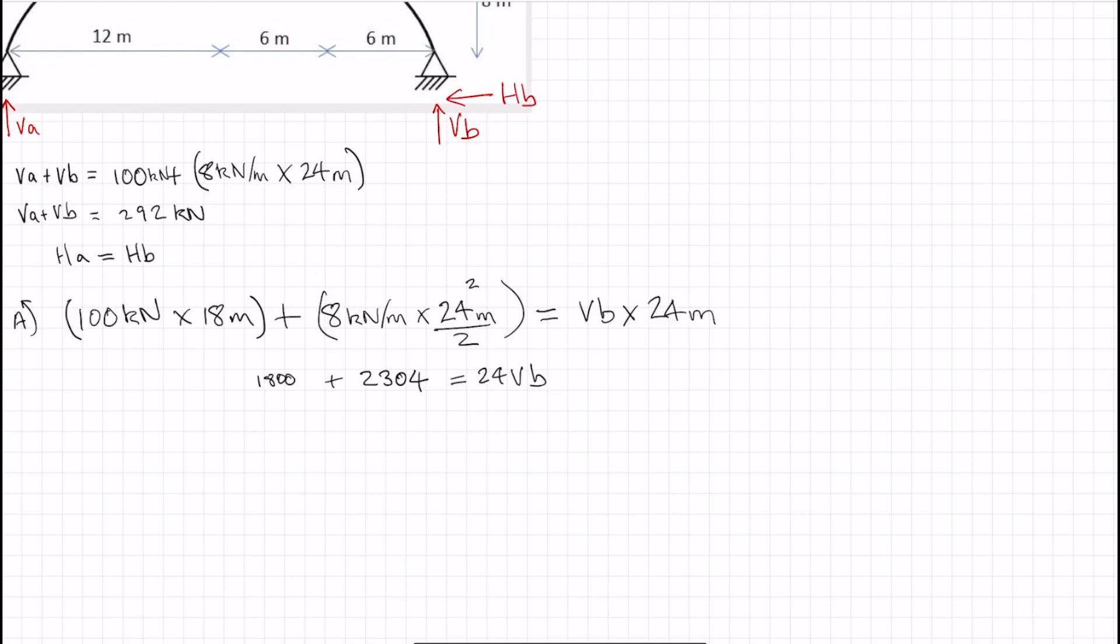So then let's do that. VB is equal to 171 kilonewtons. Let me just highlight that. And therefore VA is equal to 292 kilonewtons minus 171. VA is therefore equal to 121 kilonewtons.